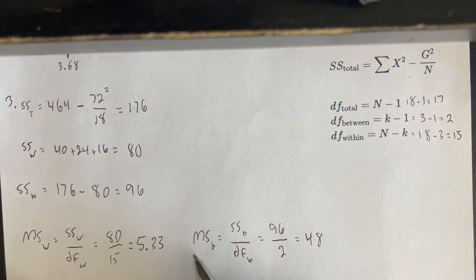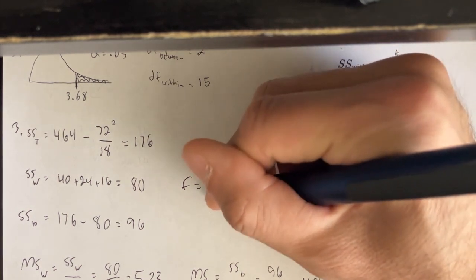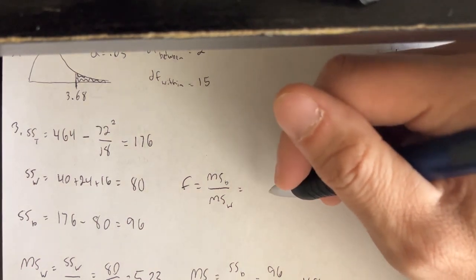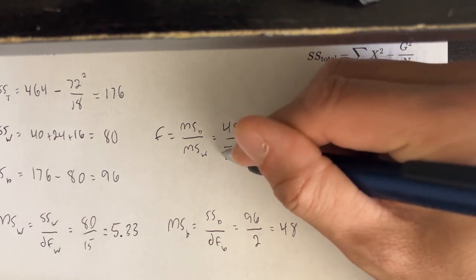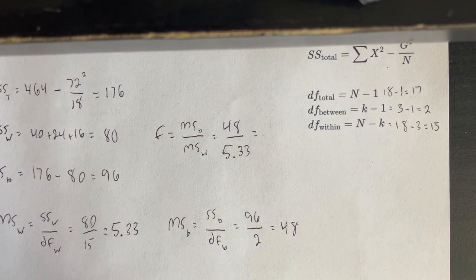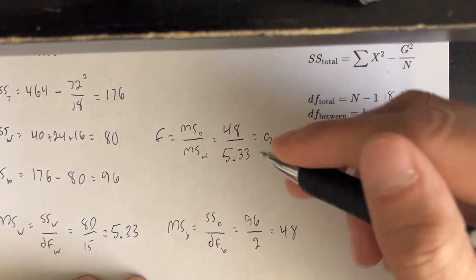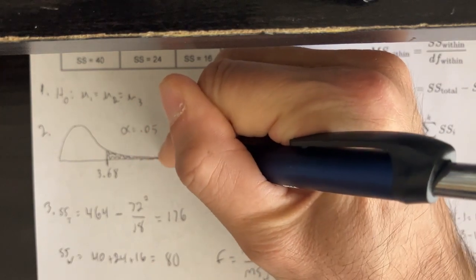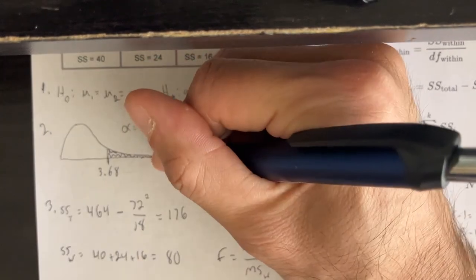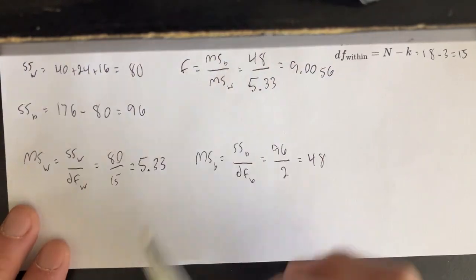Now we create a ratio of those two values to get the F-statistic: F equals MS between over MS within, which is 48 divided by 5.33. That gives us F ≈ 9.00. Looking back at our sketch, a value of 9 falls far out in the tail, well past the critical value of 3.68, so it is clearly in the rejection region.